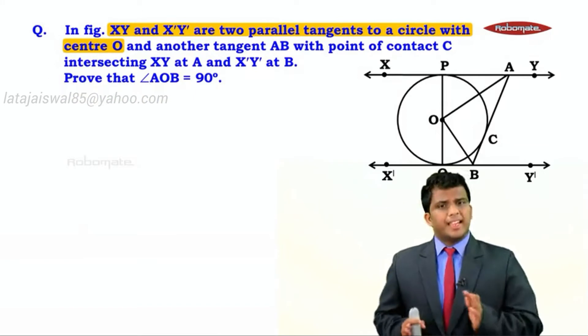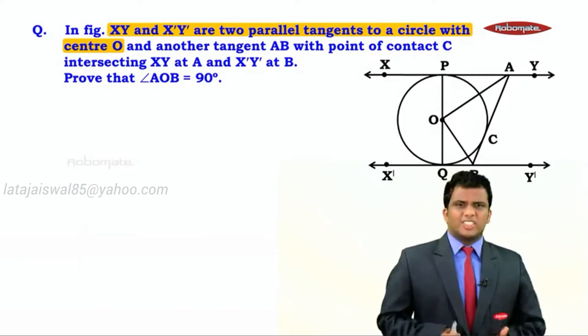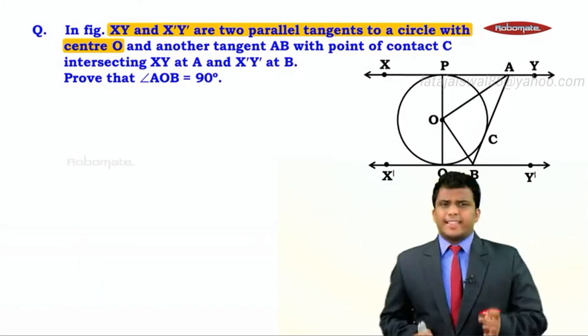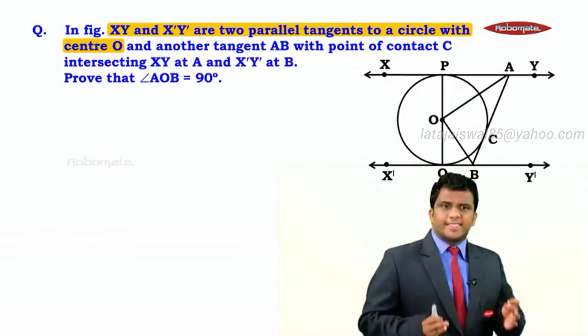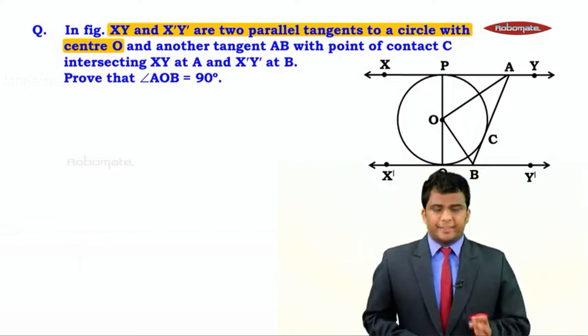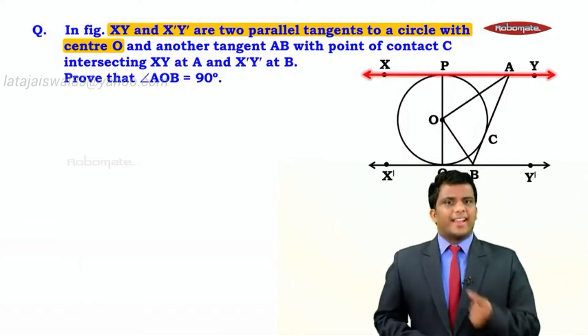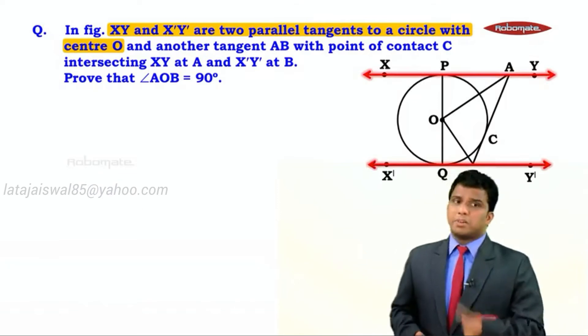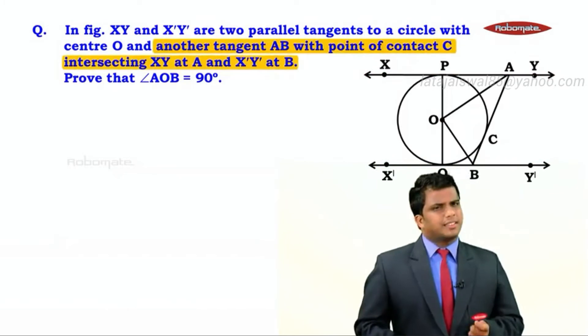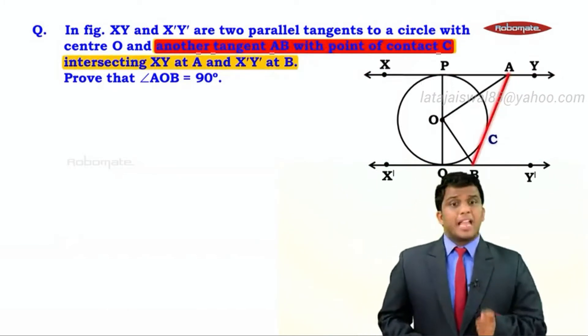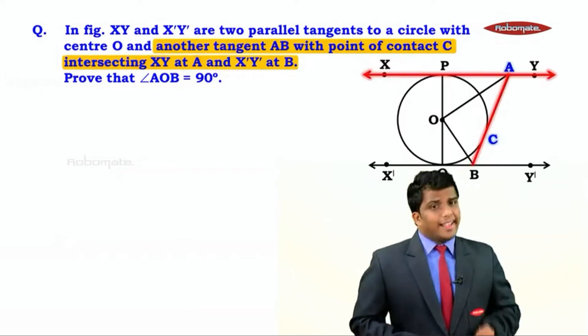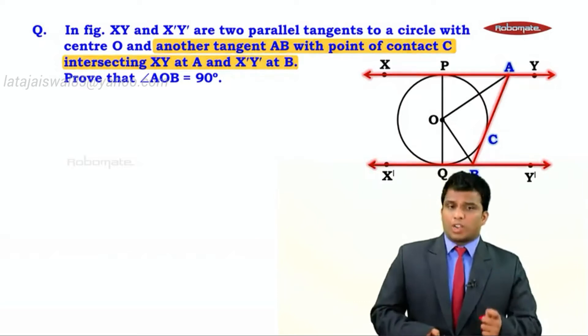The sum says in the figure XY and X'Y' are two parallel tangents to a circle with center O, and the tangent AB with point of contact C is intersecting XY at A and X'Y' at B. Prove that angle AOB is equal to 90 degrees. So we have two lines XY and X'Y' which are tangents to the circle but they are parallel to each other, and we have one more tangent AB intersecting line XY at point A and line X'Y' at point B. What are we supposed to do?